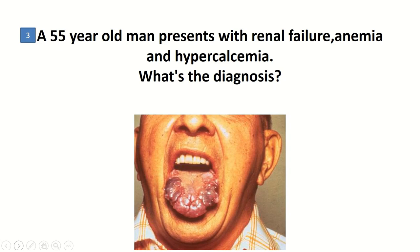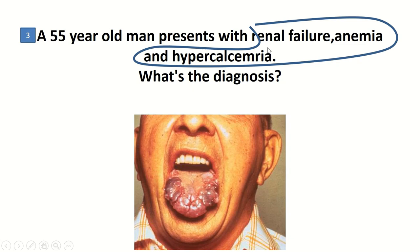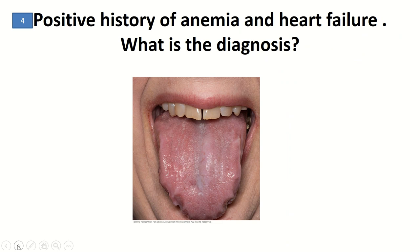This patient, a 55-year-old man, presents with renal failure, anemia, and hypercalcemia. This triad is indicative of multiple myeloma, which can result in focal infiltration in the oral cavity as seen in this image. This image could generally be indicative of a leukemia manifestation, but the correct answer is multiple myeloma.